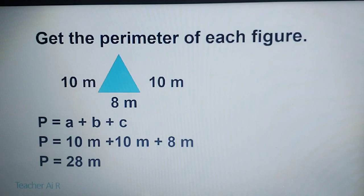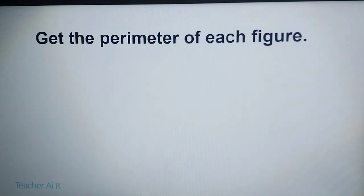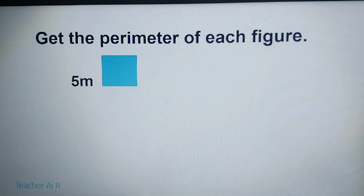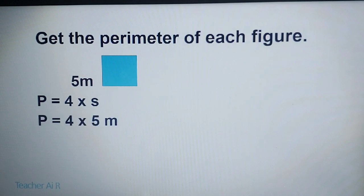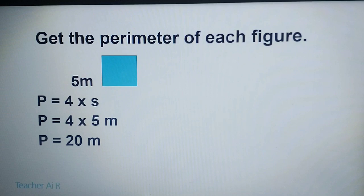Next, get the perimeter of each figure. We have a square where the measurement of each side is 5 meters. So we have the formula P equals 4 times S. Therefore, P equals 4 times 5 meters, which gives us 20 meters.